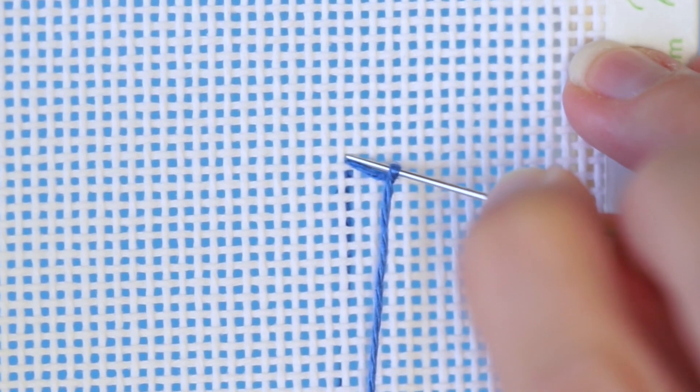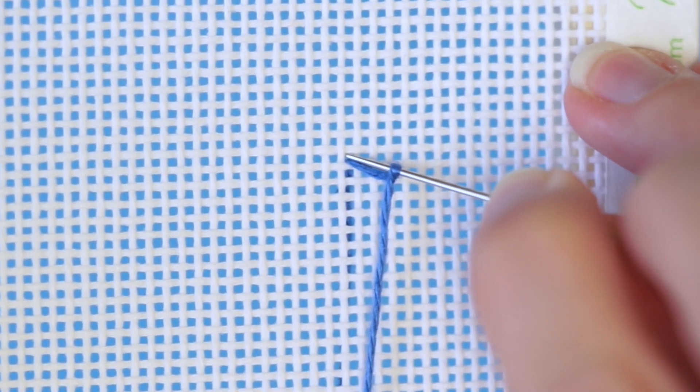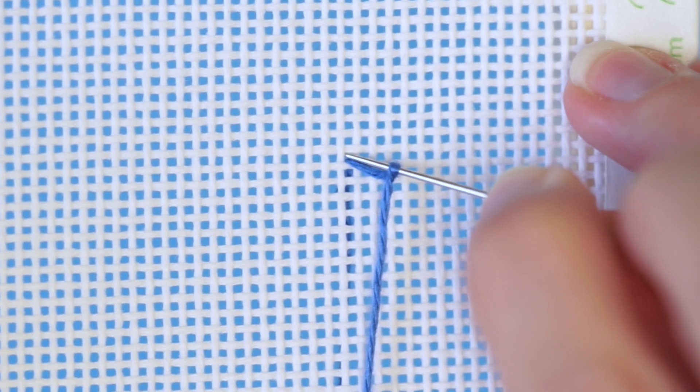Position your needle so it is going back down in the same canvas hole you came up in. This will keep your French knot from having a tail on it and will help to make a perfect circle.